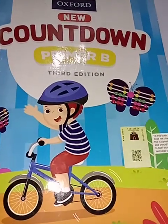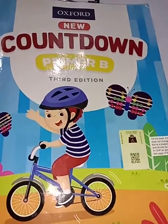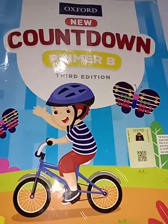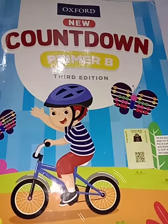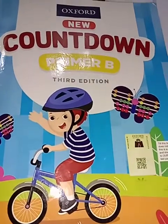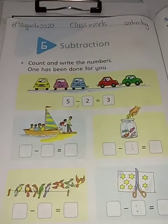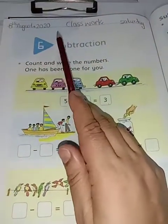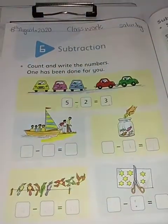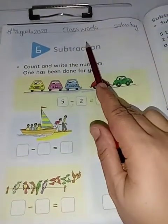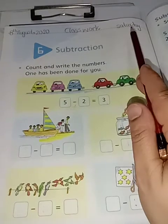So all beautiful, cutie little kids, open your maths book page number 72. Draw a line and write the date: 8th August 2020. After that, a little bit of space, we will write classwork and day Saturday.